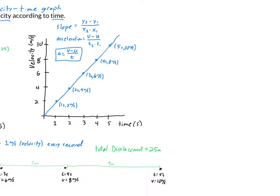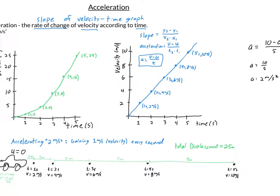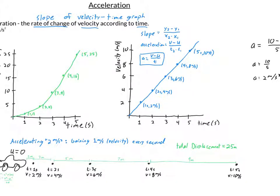Let's verify this equation with our car example, which we declared was accelerating at 2 meters per second squared. Plugging in: a equals (10 minus 0) divided by 5 seconds, which gives a equals 10 divided by 5, equals 2 meters per second squared. That's exactly what we anticipated.